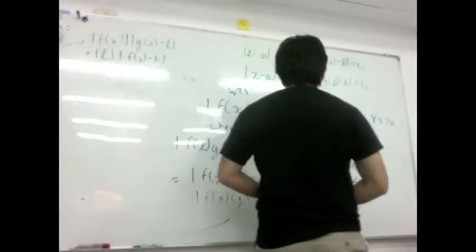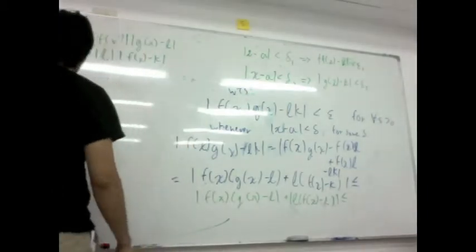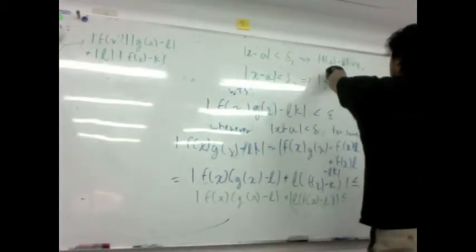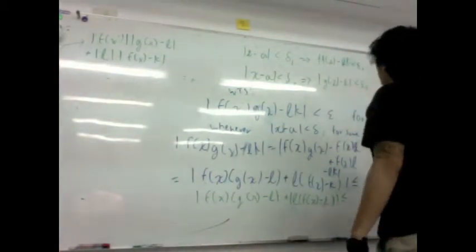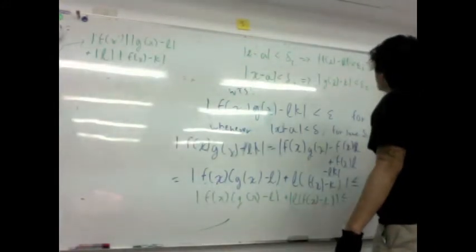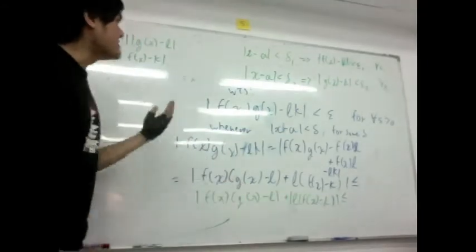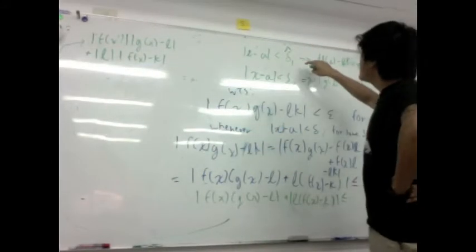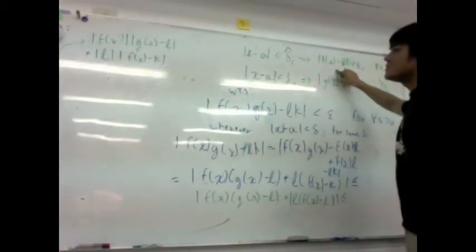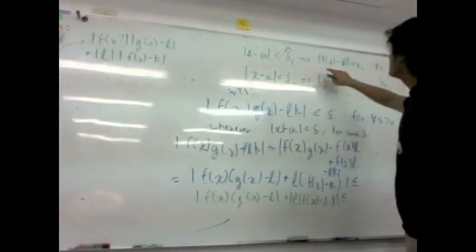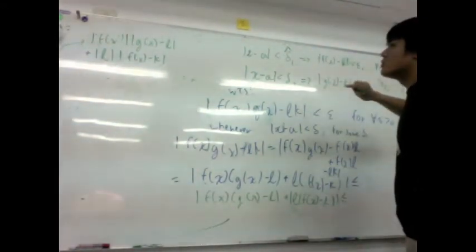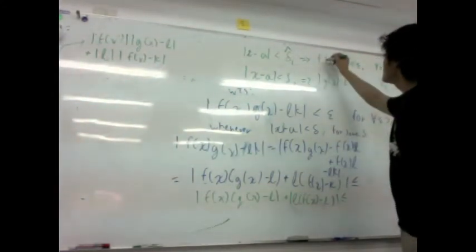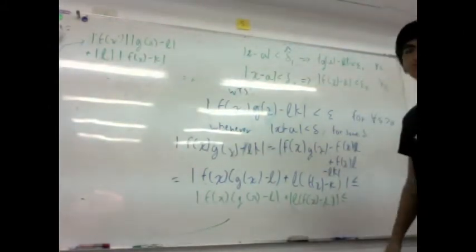So now, what can we apply here? We have products inside each parenthesis. So we can apply to each one Cauchy-Schwarz inequality. Cauchy-Schwarz, let's rewrite this guy, says that absolute value of f of x times absolute value of g of x minus l, plus absolute value of l times absolute value of f of x minus k. I mixed them up, I'm sorry. So, this guy should be g of x minus l, and this guy should be f of x minus k.